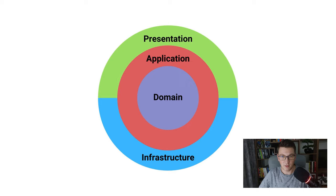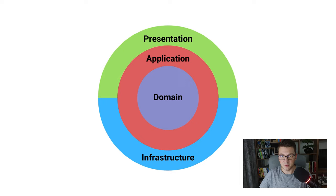I'm going to start from the core of the clean architecture and move outwards. In the domain layer we will typically define things like our domain entities containing the most important business rules. You can also see things like aggregates, value objects, and domain events if you are using domain-driven design. Then we can define repository interfaces, factory interfaces, domain services and so on. This is also a good place to define your custom exceptions. The only rule you can't break in the domain layer is you cannot reference any of the outer layers. The outer layers are allowed to reference the domain layer but the domain layer cannot reference any other layer in the architecture.